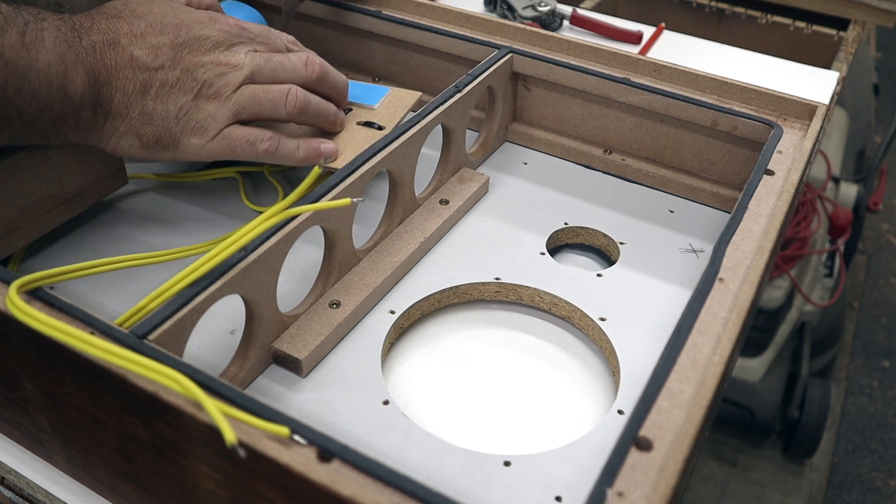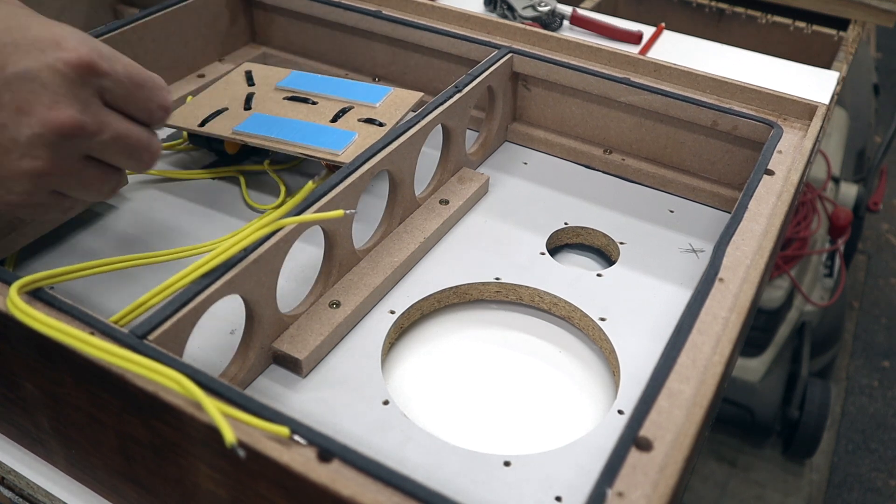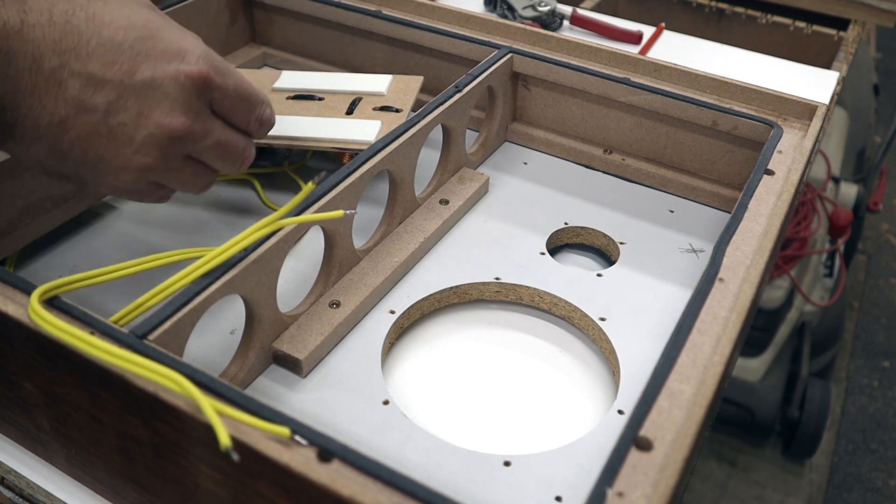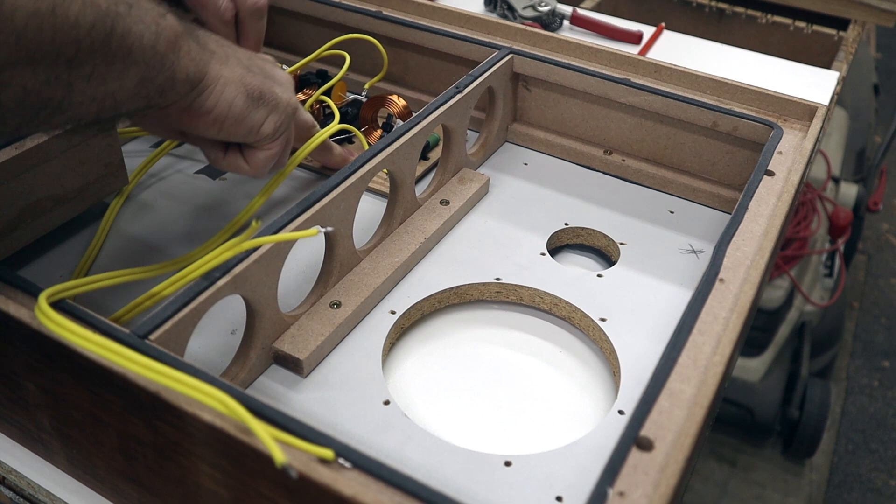Secure the crossover board to the inside of the enclosure. I use a combination of double-sided tape and a few screws. You can also permanently glue it down with two-part epoxy for a more secure bond.